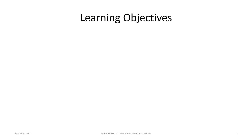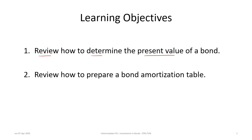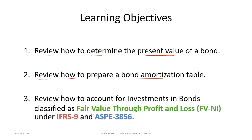This tutorial has three learning objectives. The first is to review how to determine the present value of a bond. The second is to review how to prepare a bond amortization table. The third is to review how to account for investments in bonds classified as Fair Value through Profit and Loss, or FVNI, under both IFRS Standard 9 and ASPE Section 3856.